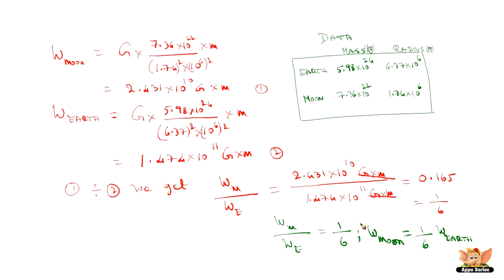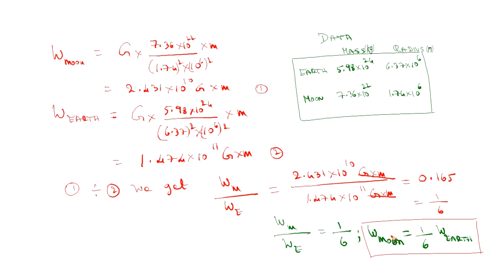Remember, the mass of an object — whether it is on the Moon or on the Earth — is the same. So we understand from this that the mass of an object is constant whether it is on any planet, whereas the weight of the same object changes. When comparing the Moon and the Earth, we get a ratio of 1/6.